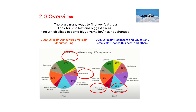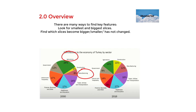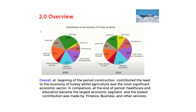For the overview, there are many ways to find key features. First, look for the smallest and biggest slices. Second, find which slices became bigger, smaller, or have not changed. For instance, agriculture was one of the largest in 2000, while manufacturing was one of the smallest. In 2016, healthcare and education was one of the largest, and finance, business, and others was one of the smallest. My overview reads: 'Overall, at the beginning of the period, construction contributed the least to the economy of Turkey while agriculture was the most significant economic sector. In comparison, at the end of the period, healthcare and education became the largest economy segment and the lowest contribution was made by finance, business, and other services.'